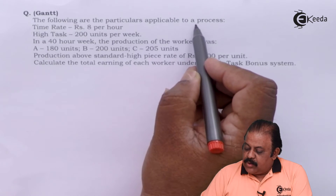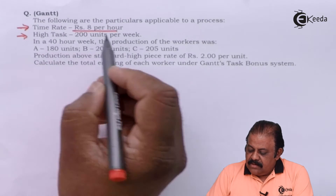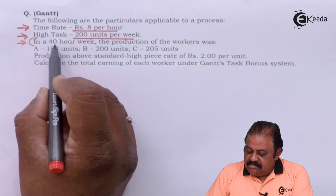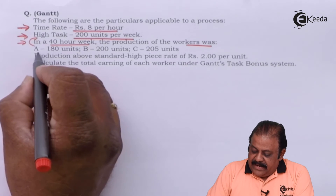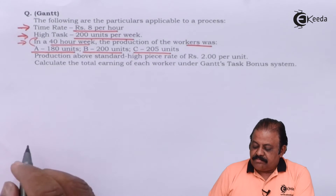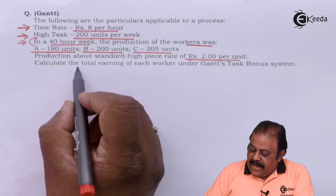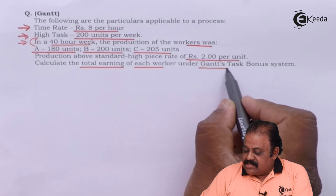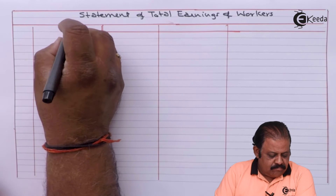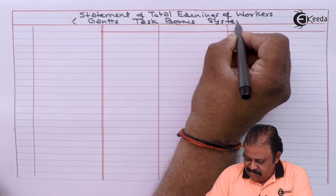The following are particulars applicable to a process: time rate — rupees 8 per hour; high task — 200 units per week in a 40-hour week. The production of the workers was: A — 180 units, B — 200 units, C — 205 units. For production above standard, a high piece rate of rupees 2 per unit is assured. Calculate total earnings of each worker under Grant's Task Bonus System.